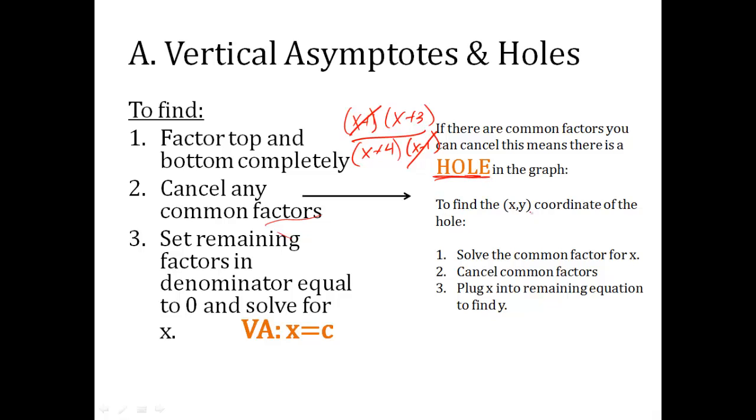To find the xy coordinate of the hole, you solve the common factor for x. So in this case, x minus one equals zero, that means x is one. Cancel out the common factors and then plug that x into the remaining equation. What's left is x plus three over x plus four. So one plus three over one plus four is four fifths. That means the hole exists where x is one and y is four fifths.